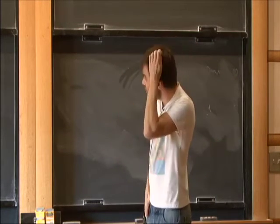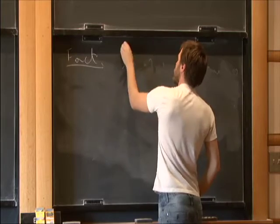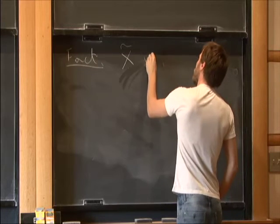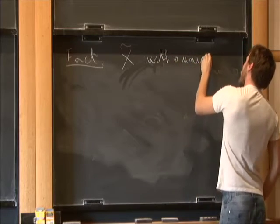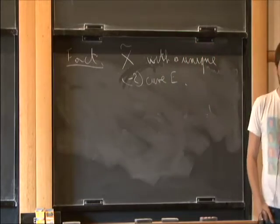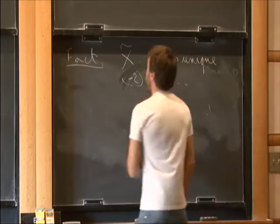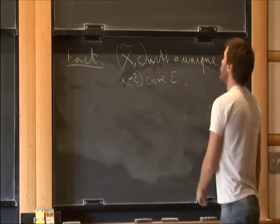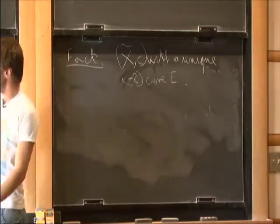So with this strategy, what can we do? The setup is: take X̃, a complex surface which has a unique minus-2 curve. This minus-2 curve ensures that you're not working with a generic almost complex structure. I will take some real algebraic surfaces, and since the minus-2 curve is unique, it will be real.